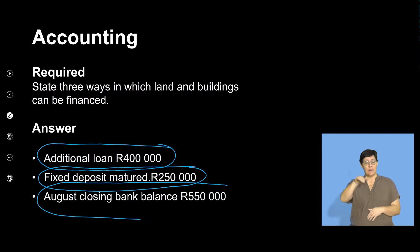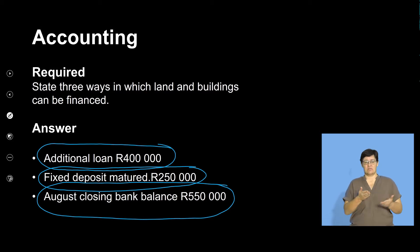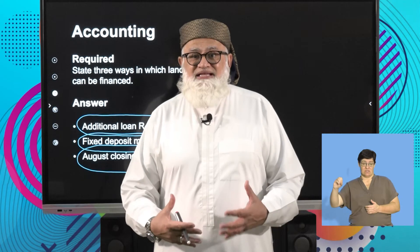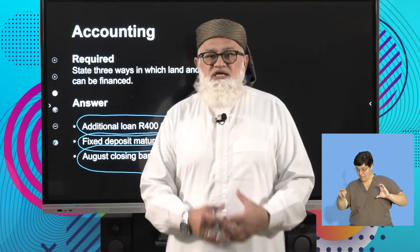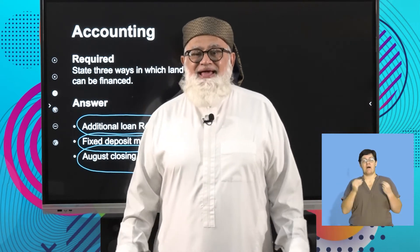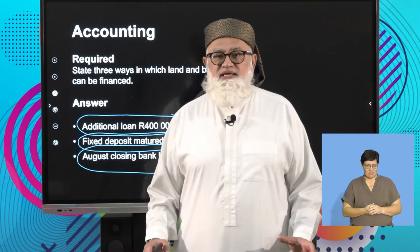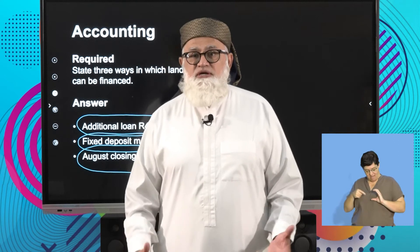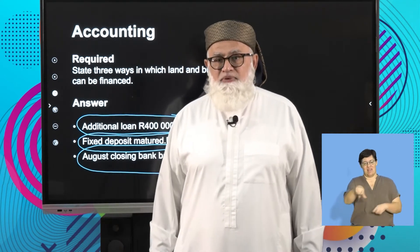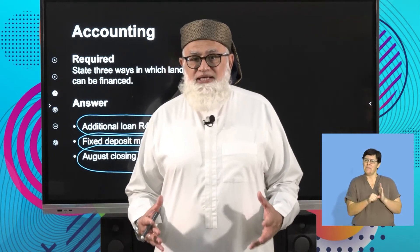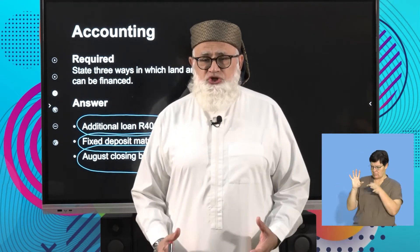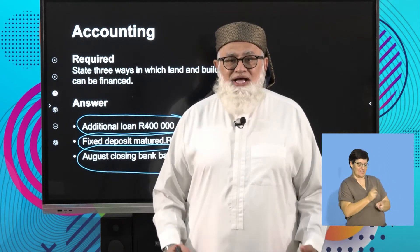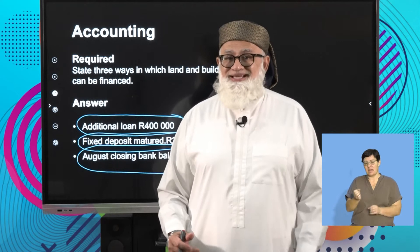Third, look at your bank balance at the end of your budget period. In this case there was a closing balance of 500,000 Rand, meaning after subtracting receipts minus payments, you had a surplus of cash of 550,000 Rand. You can use that cash surplus to finance the land and buildings. What is important is to look at the information and the context of the question, and answer based on that context.